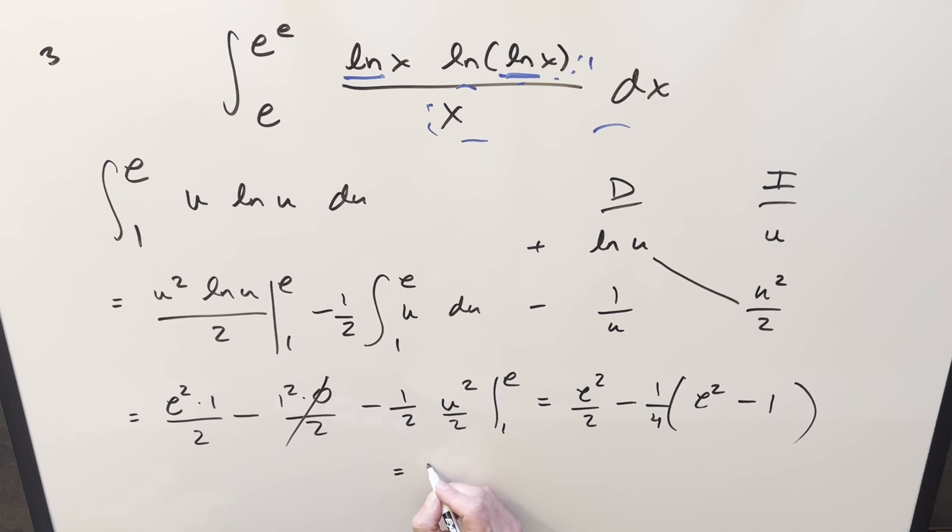So now we have e² over 2 minus, distributing in this, we're going to have e² over 4 minus 1 fourth times minus 1 is plus 1 fourth. Well, I can get a common denominator over here and write this as 2 over 4. Putting this together with a common denominator for my final solution, we get just (e² + 1) over 4, and that's it.